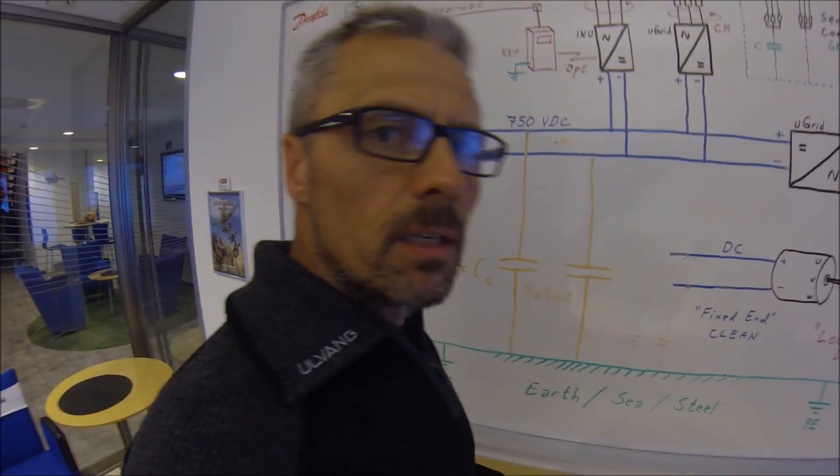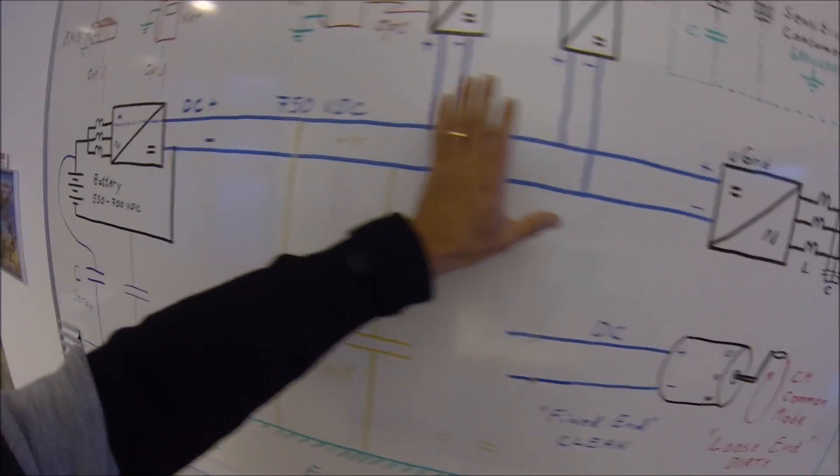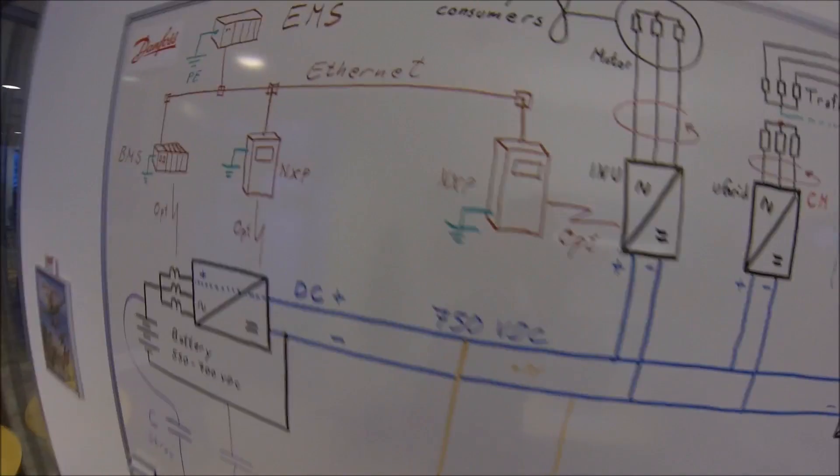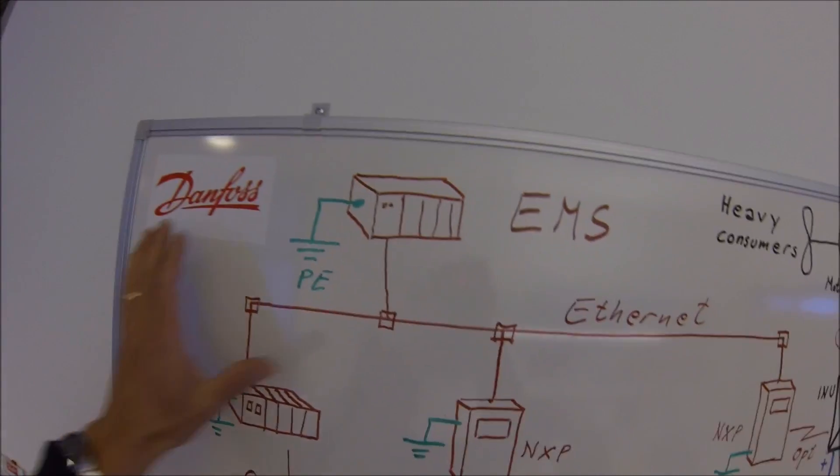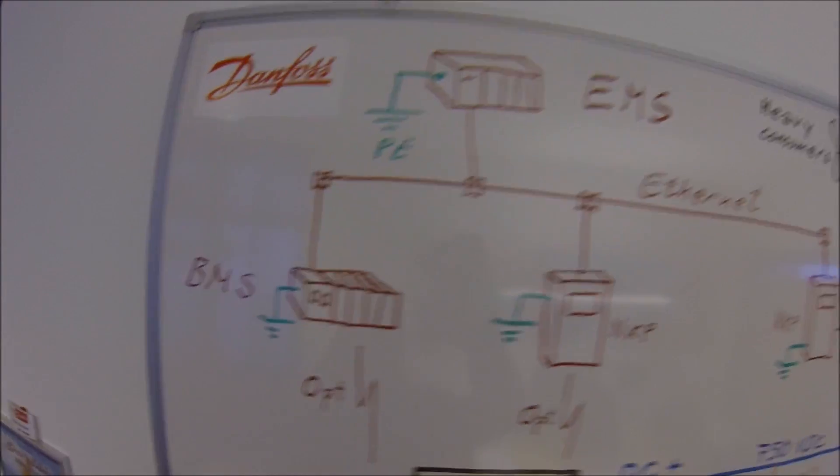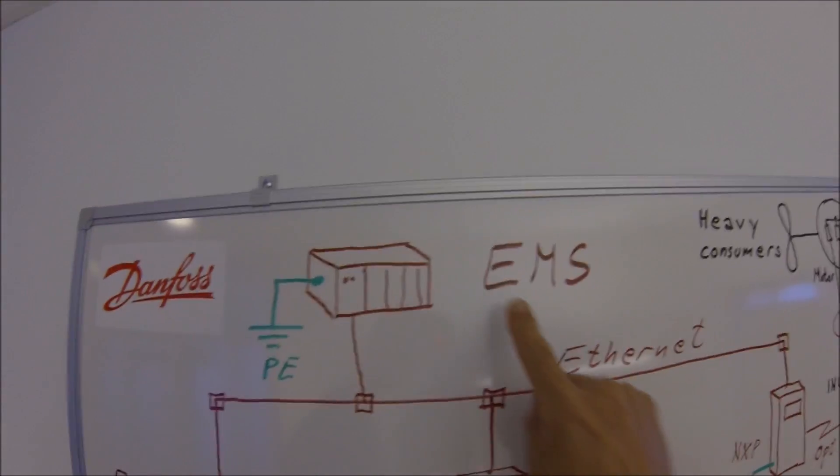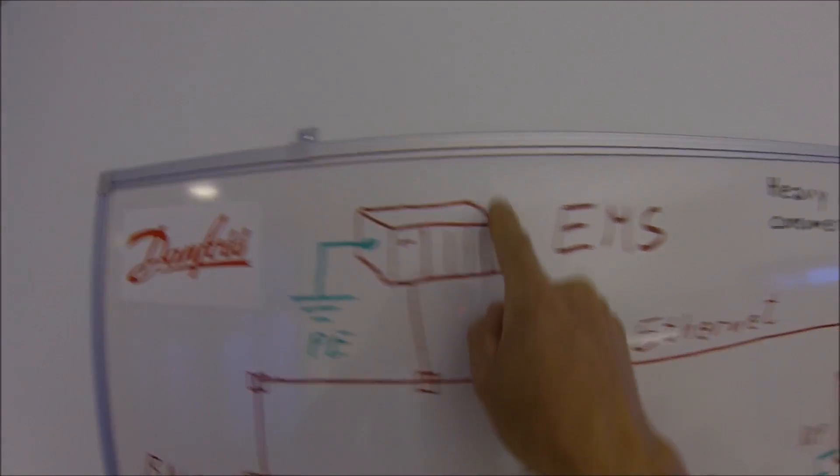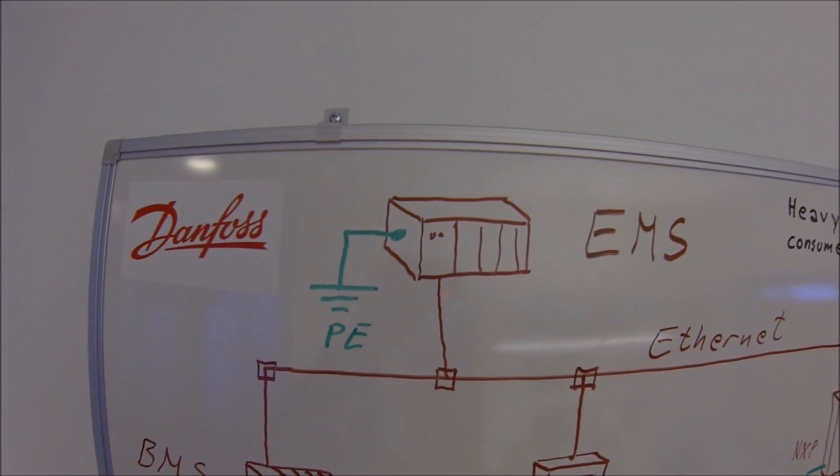Now that we have succeeded in making a relatively clean DC bus, there is something that we have to consider when it comes to the control system of it all. Usually, this is an energy management system consisting of some kind of industrial PLC system.